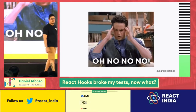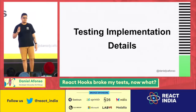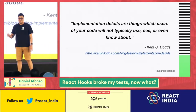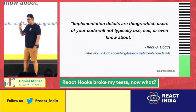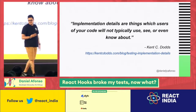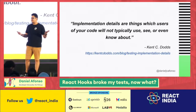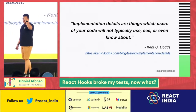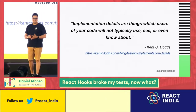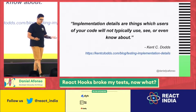We did some research and came to the conclusion that there was only one guilty party: testing implementation details. What are implementation details? As Kent C. Dodds said, implementation details are the things which users of your code will not typically use, see, or even know about. In perspective, implementation details can be things like the component state, the props we were sending to our components. Our tests were filled with these things — tied to our state — and we were not focusing on the user.